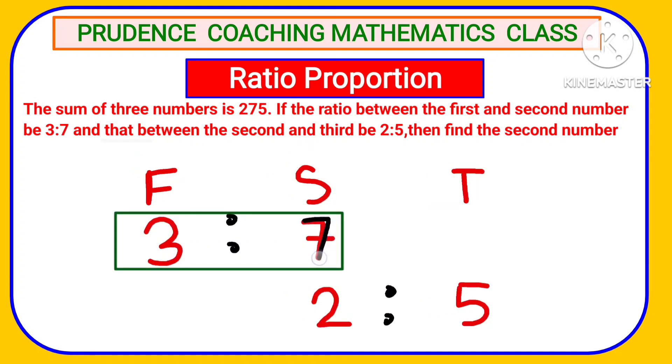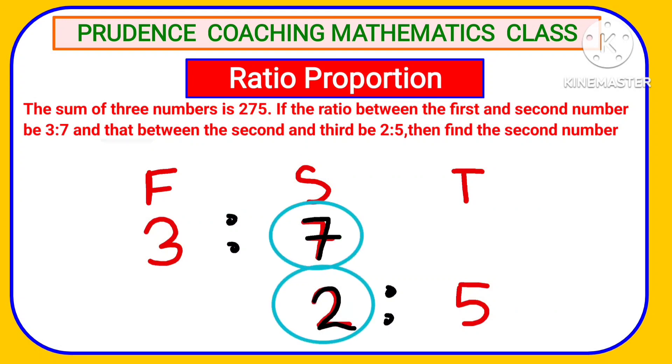So here in the unit, you can see in place of second number it is 7. And here we have 2. Is the second number different in both the places? Yes it is different in ratio, that is unit. But actually it is same.